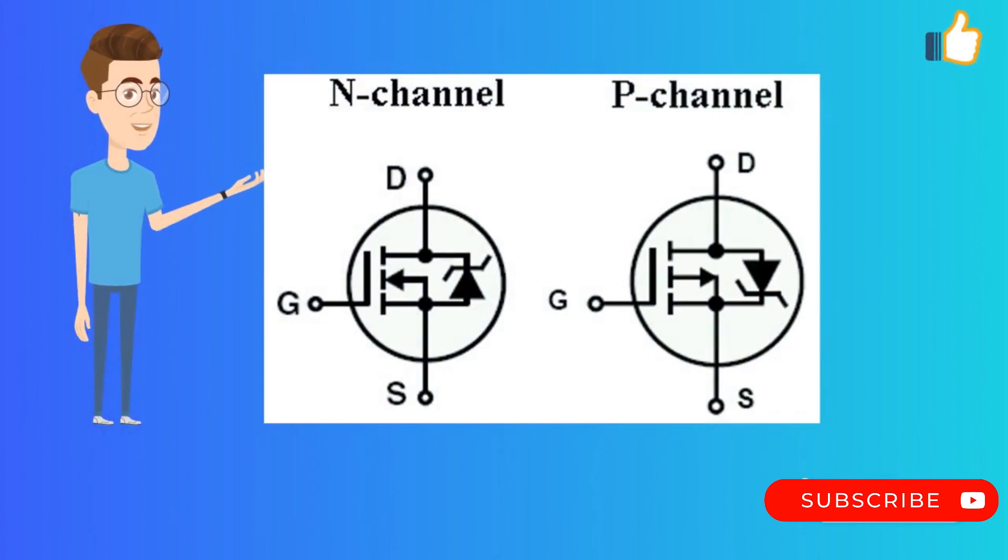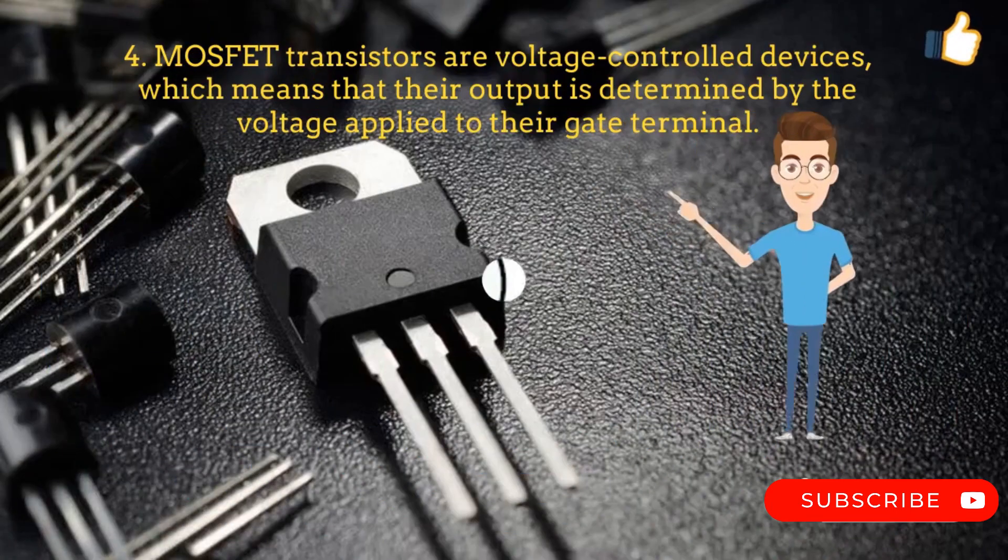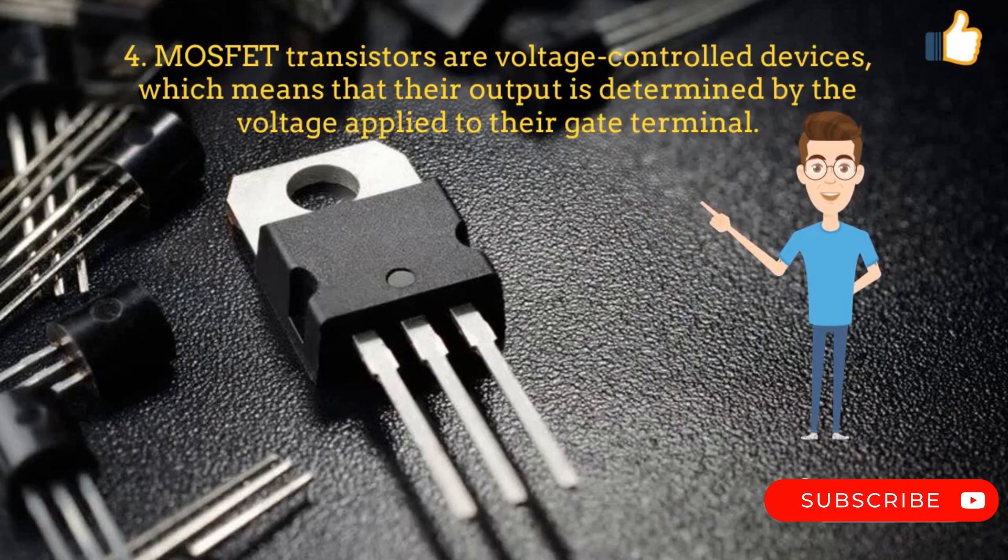There are two types of MOSFET transistors, the N channel and P channel. MOSFET transistors are voltage-controlled devices, which means that their output is determined by the voltage applied to their gate terminal.